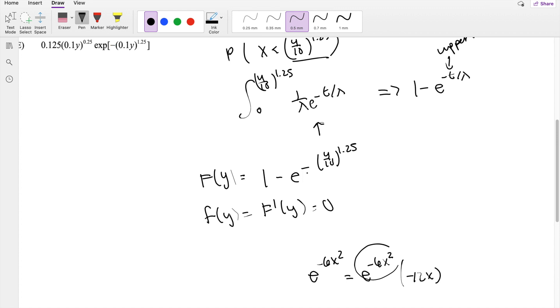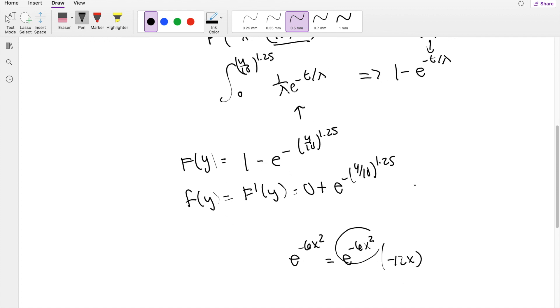When I take the derivative, the negative, negative cancels out, so you get a positive. e to the negative y over 10 to the 1.25 times the chain of this. So then the exponent comes front, so that's 1.25.